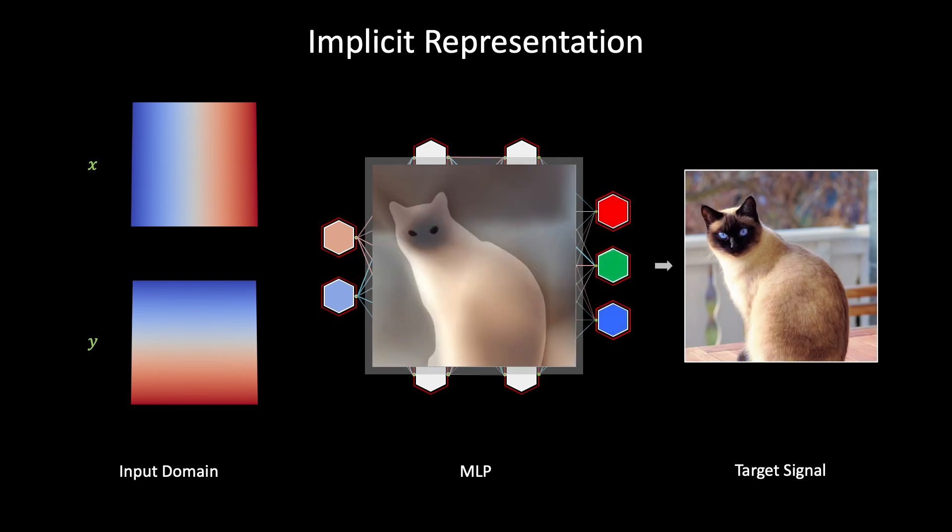When expanding the representation to higher dimensional or more complex target signals, the existing approach falls short in modeling high-frequency components. This limitation arises from the implicit smoothness bias inherent in MLPs.